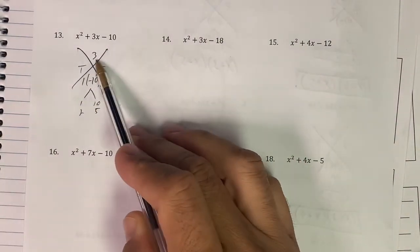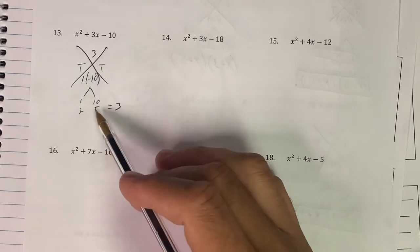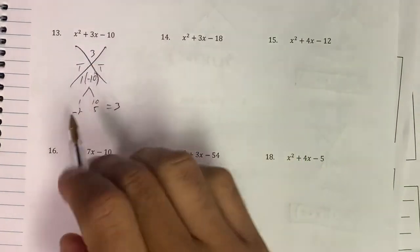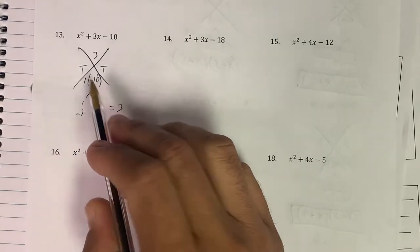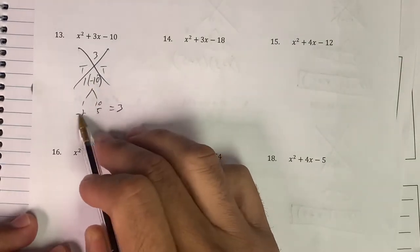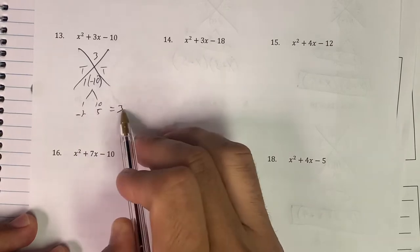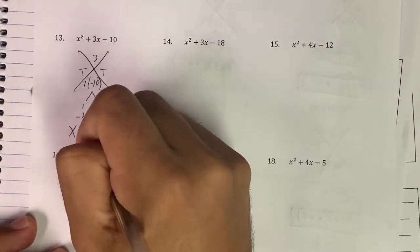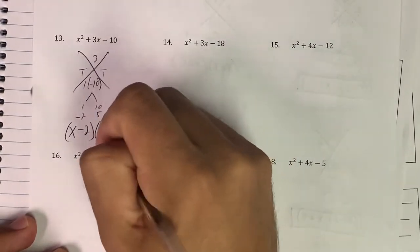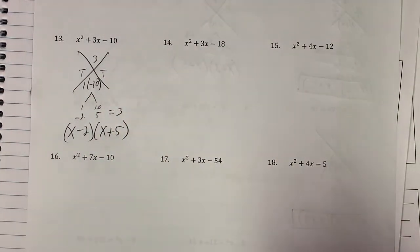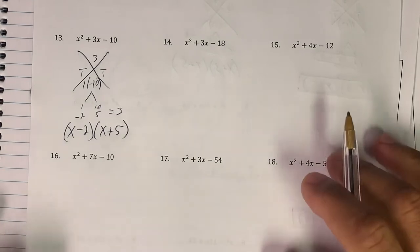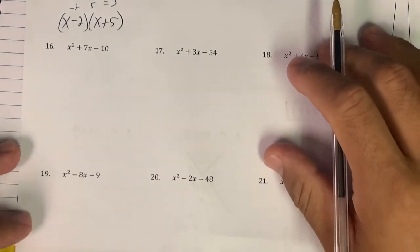Still 1 and 10, 2 and 5. I want it to equal positive 3. Well, I know when I'm looking at this, if I want a positive answer, I need the smaller number to be negative. Now when I multiply negative 2 times 5, that gives me negative 10, and when I add these it's 5 minus 2, which is 3. So this is x minus 2, x plus 5.